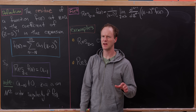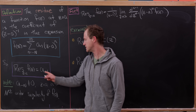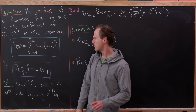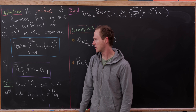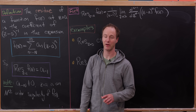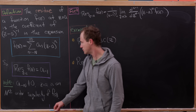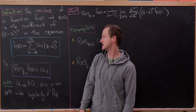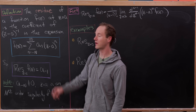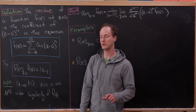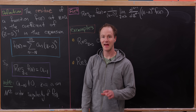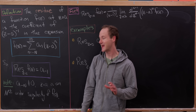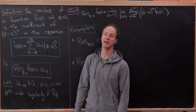So in other words, this residue is simply a_{-1} in this expansion. We've written the sum starting at negative capital N, assuming that a_{-N} is not zero, so the sum really starts at that lowest point. In that case we say that z equals a is a so-called Nth order singularity of f(z).